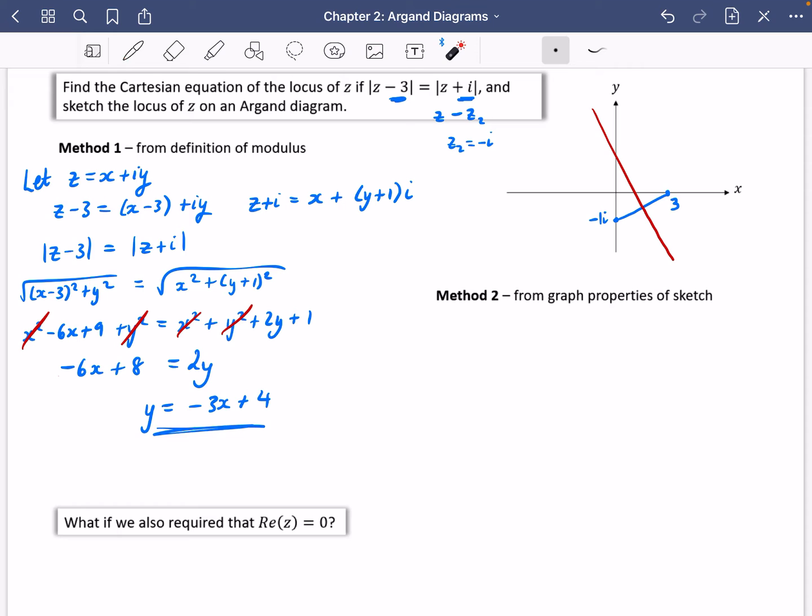Now, this kind of works. We can see that it's going to have a negative gradient. That makes sense. And it's got a positive Y intercept, and that makes sense as well. But we're going to try and do it from the graph properties of the sketch. So what I'm going to do, let's think about these as coordinates now. So I'm not going to call it minus I, minus 1I because I've got Y and X. I'm going to call it 3 and minus 1.